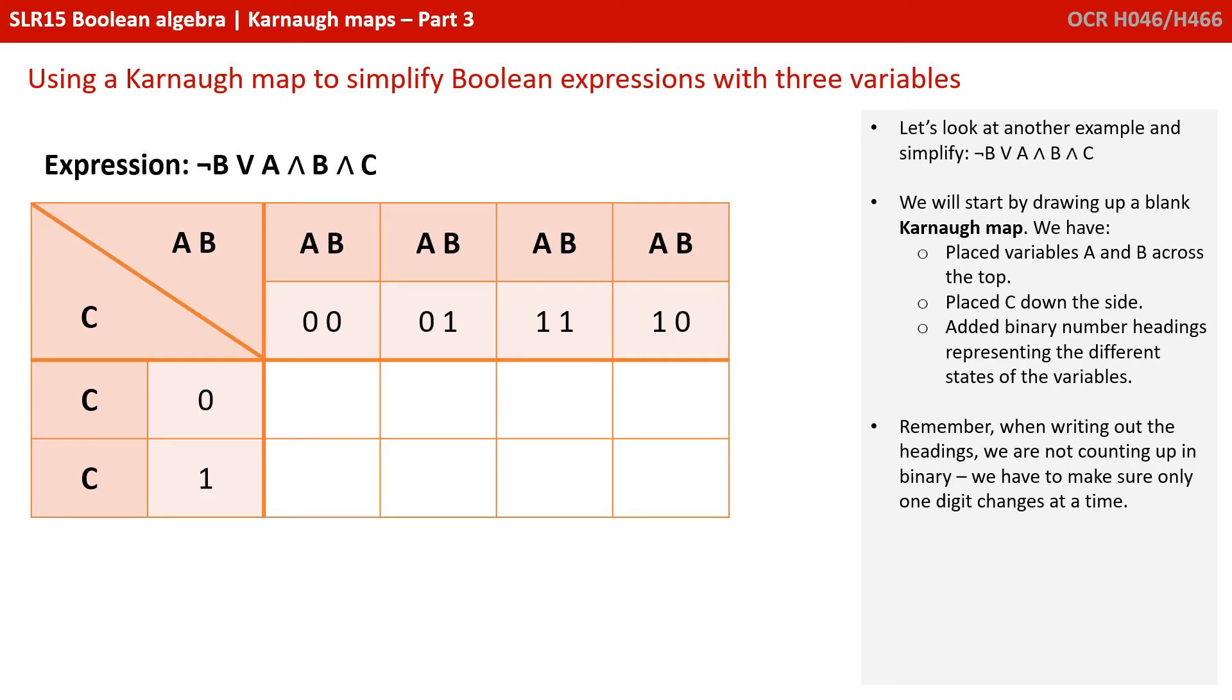Okay, let's work through another example then, just to make sure you've got this in your head. So, we're looking at NOT B or A AND B AND C. We'll start by drawing up a blank Karnaugh map. And as always, we've placed the variables A and B across the top, C down the side. And we've added binary number headings representing the different states of the variables.